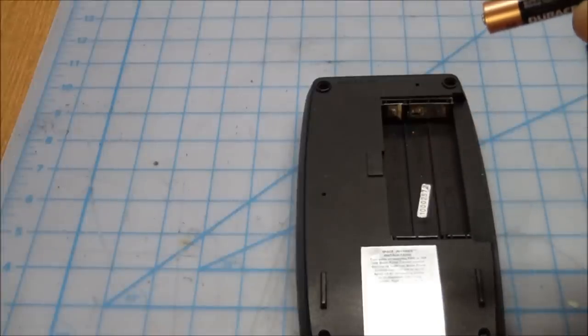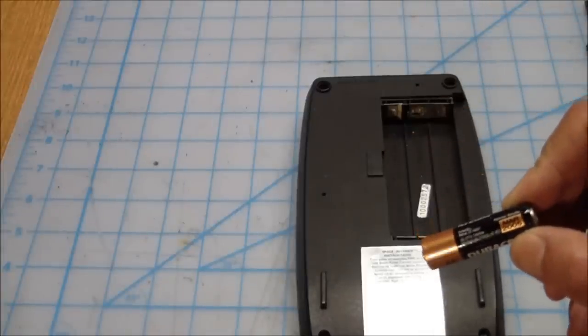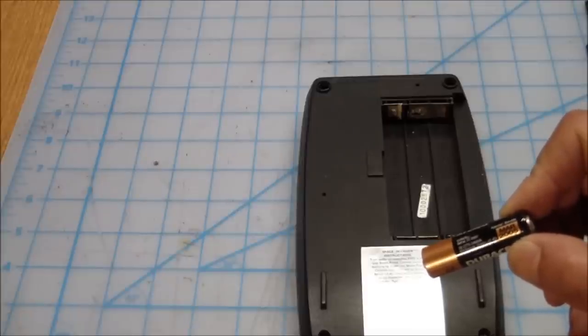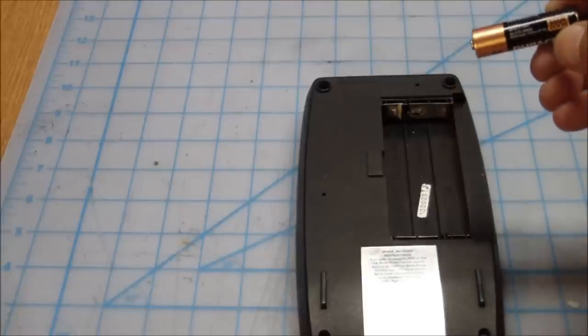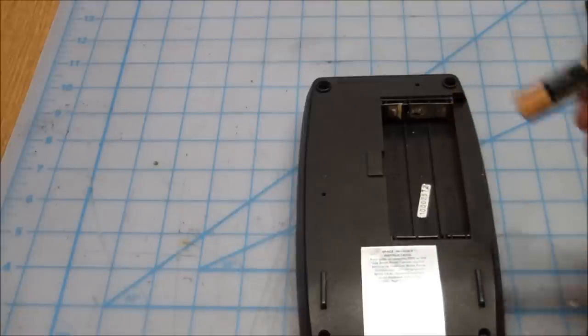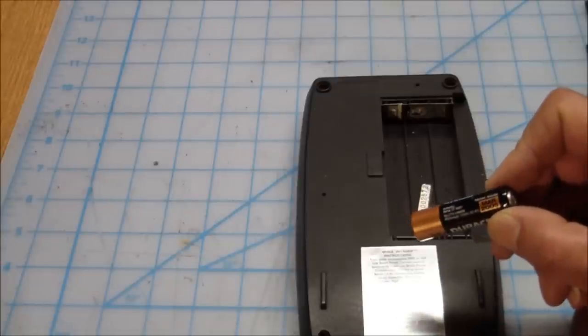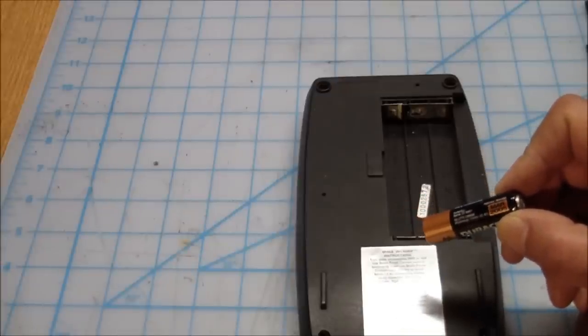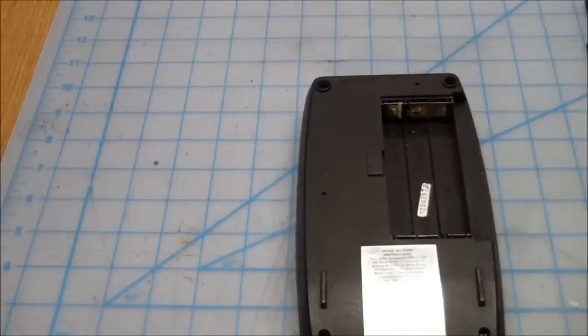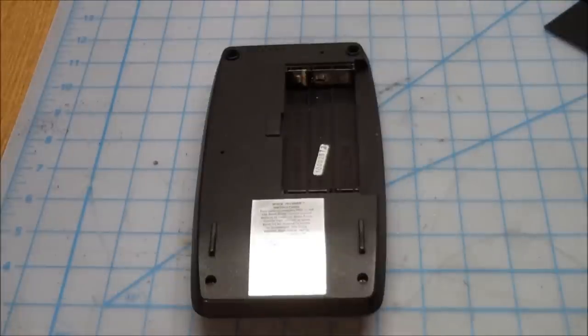Since these are alkaline batteries, probably the best way to clean them up would be plain old household vinegar and a Q-tip or several. Let's see if we can get that corrosion off battery terminals.